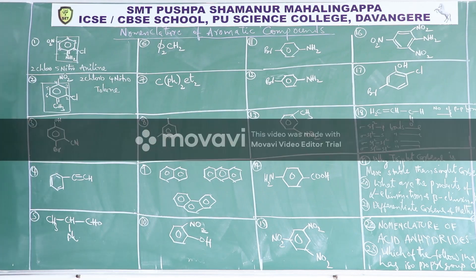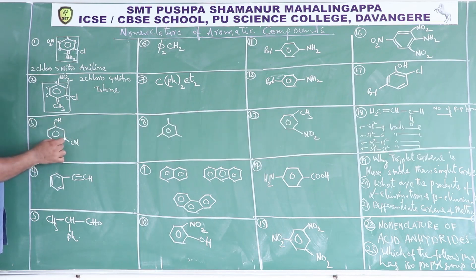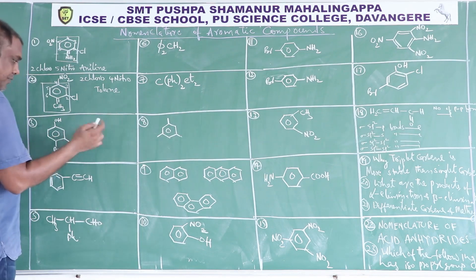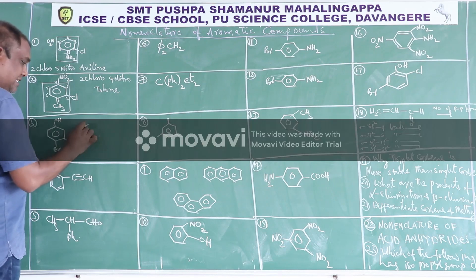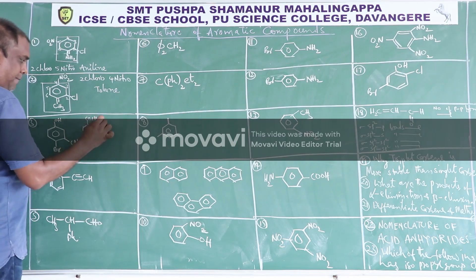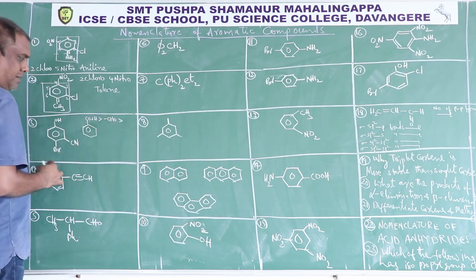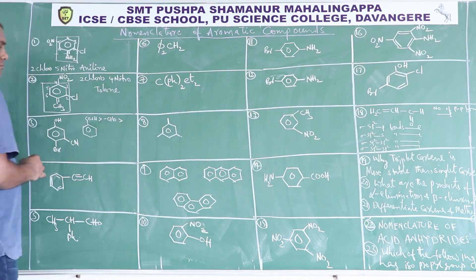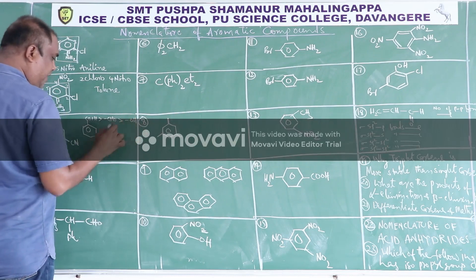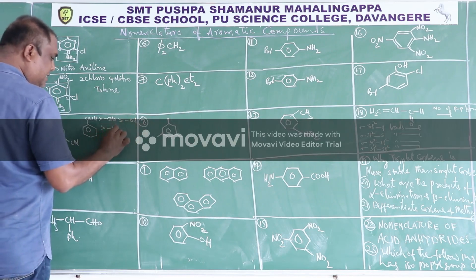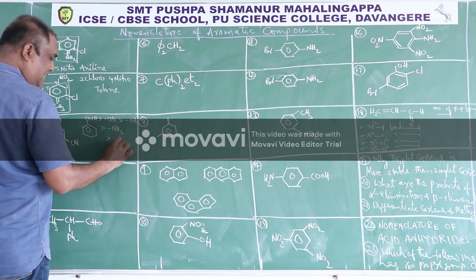Here there is an OH group so it is called phenol, and a CN group called benzonitrile. The order for selecting the base compound by priority is: first COOH is base compound, then CHO, then OH, then NH2, then CH3.